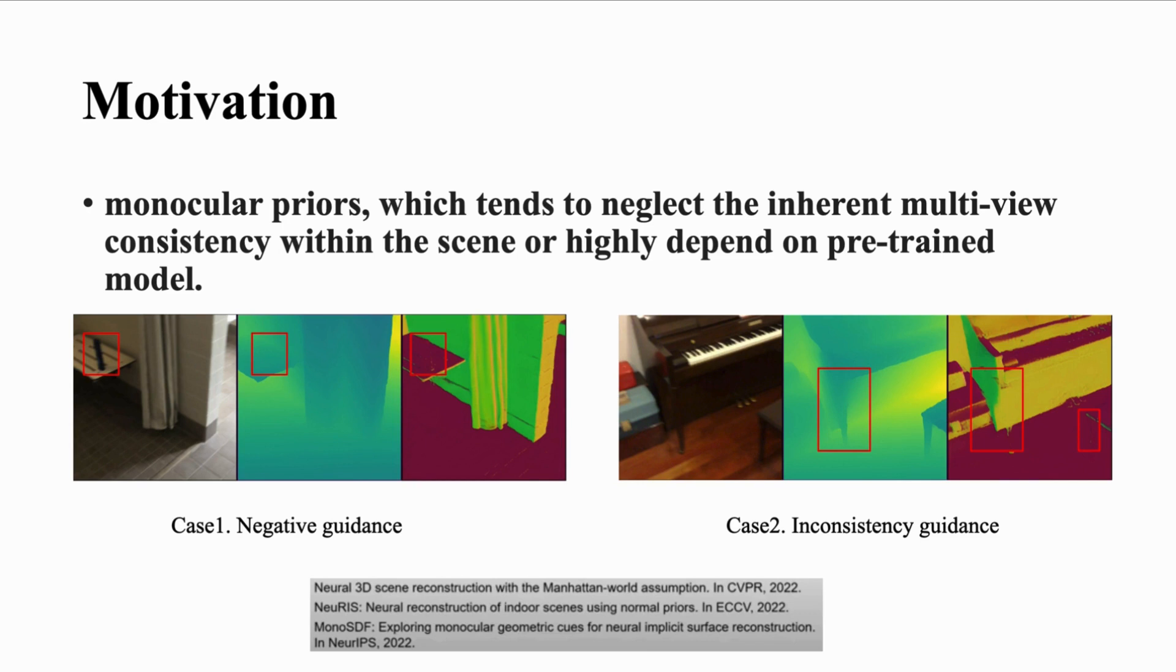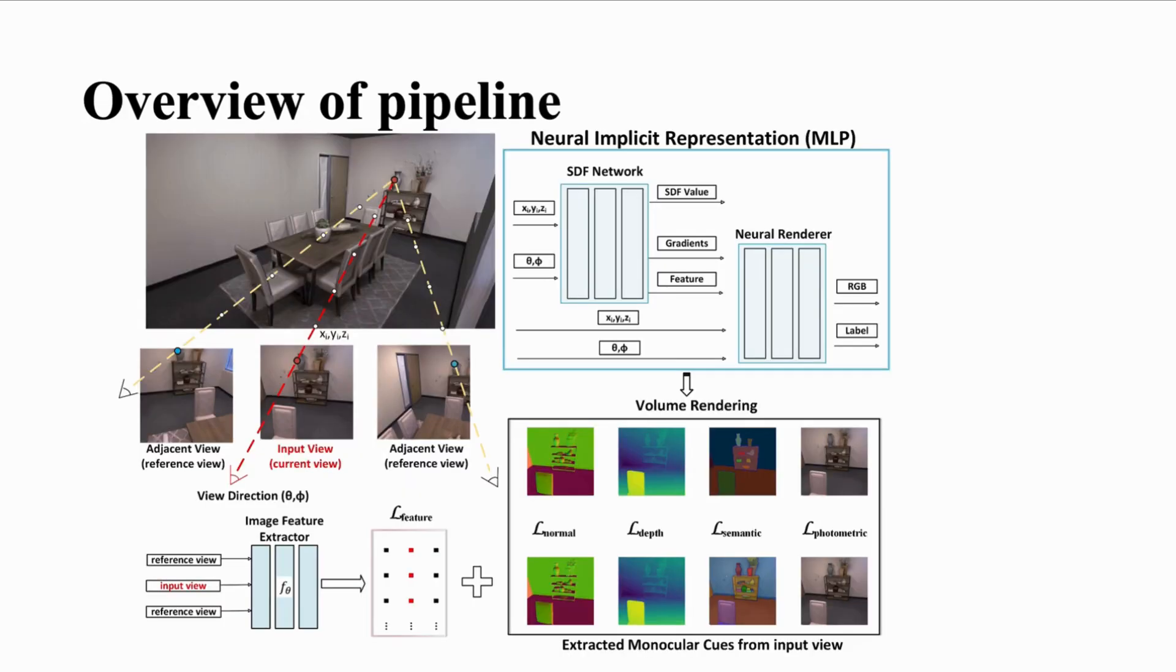To address that, we introduce PMVC, a pioneering approach utilizing multi-view deep features and an adaptive sampling strategy to significantly enhance multi-view image consistency. PMVC leverages neural networks for implicit scene representation. By incorporating multi-level constraints, adaptive sampling, and robust optimization techniques, PMVC achieves a more accurate and detailed scene reconstruction.